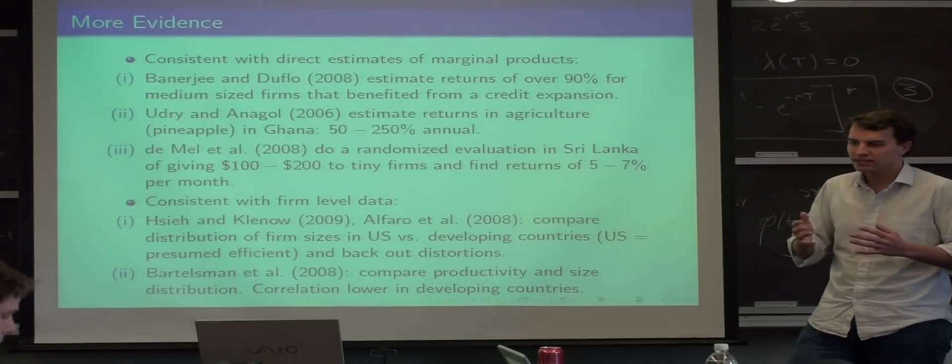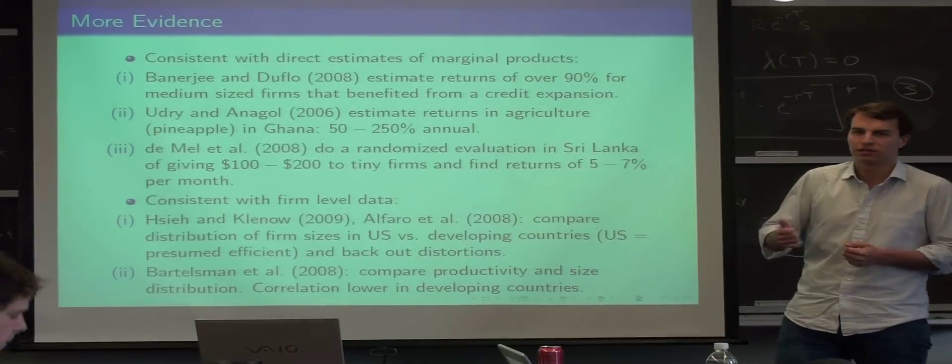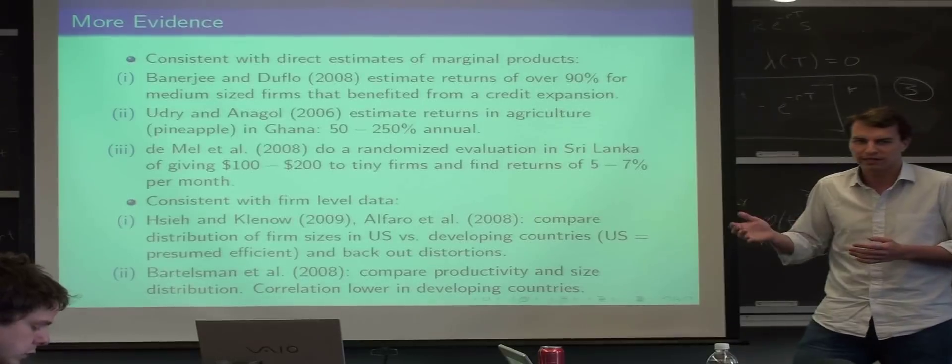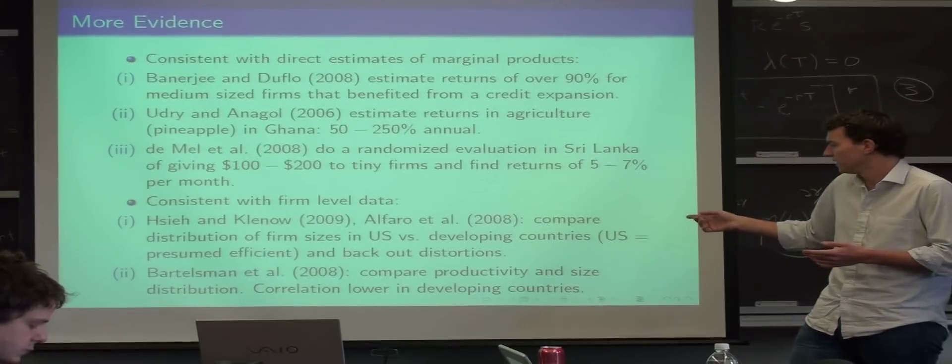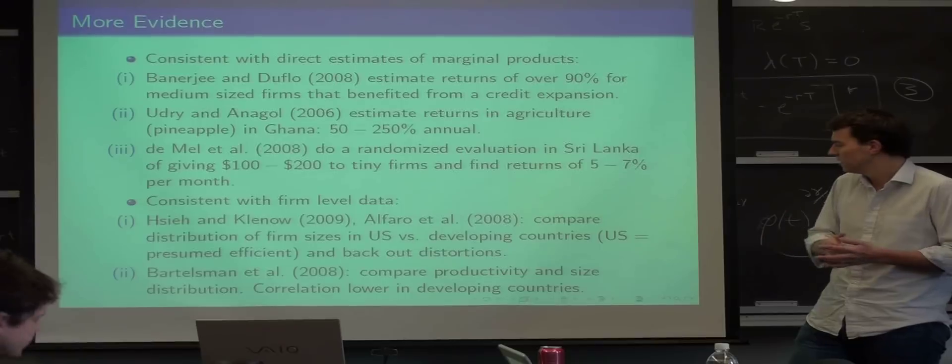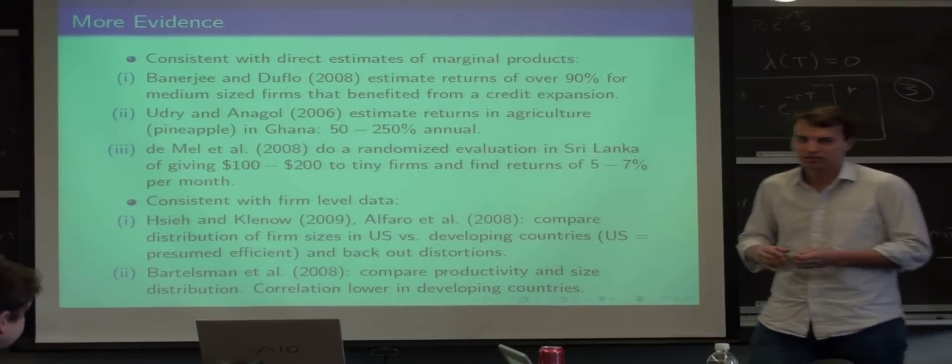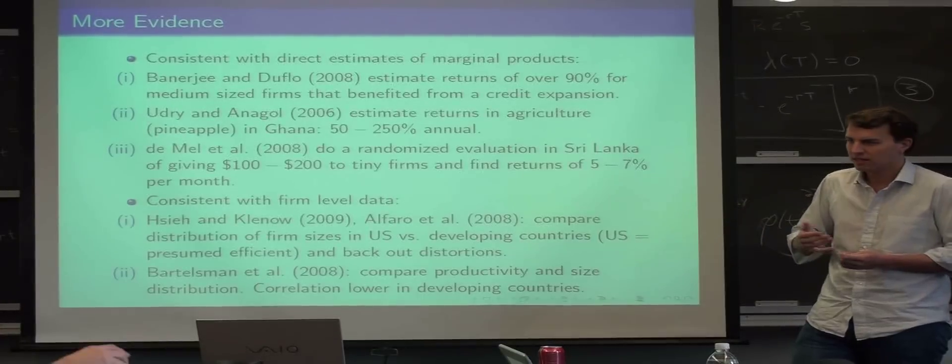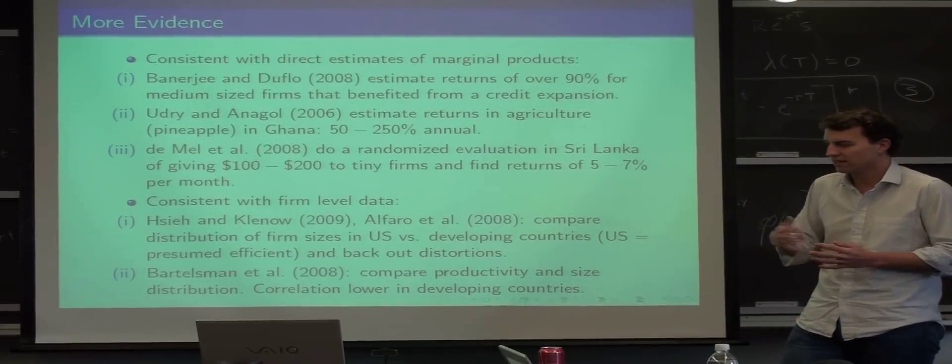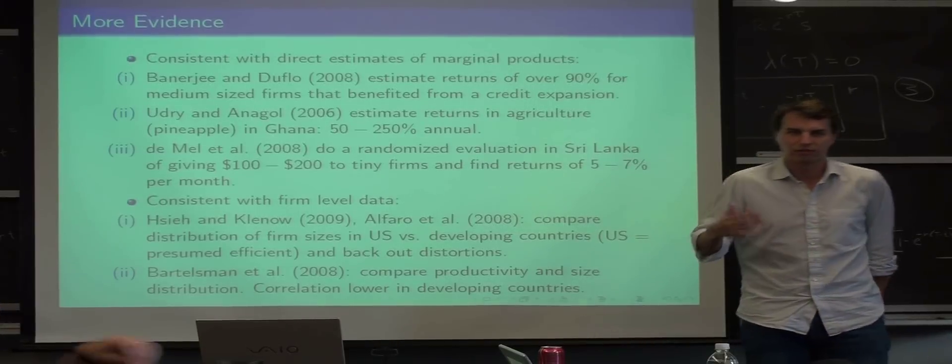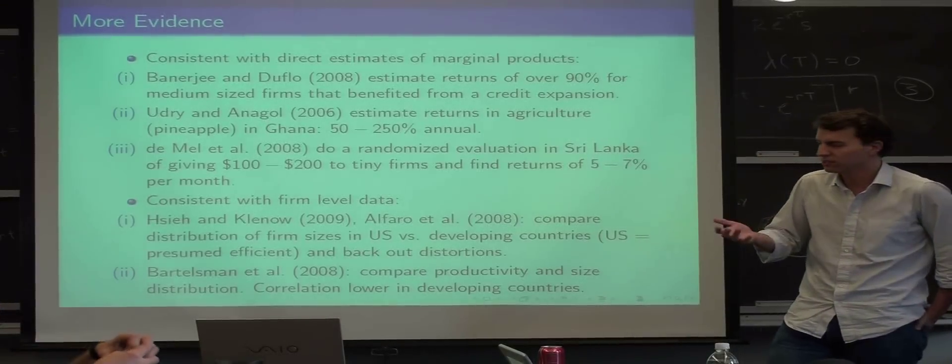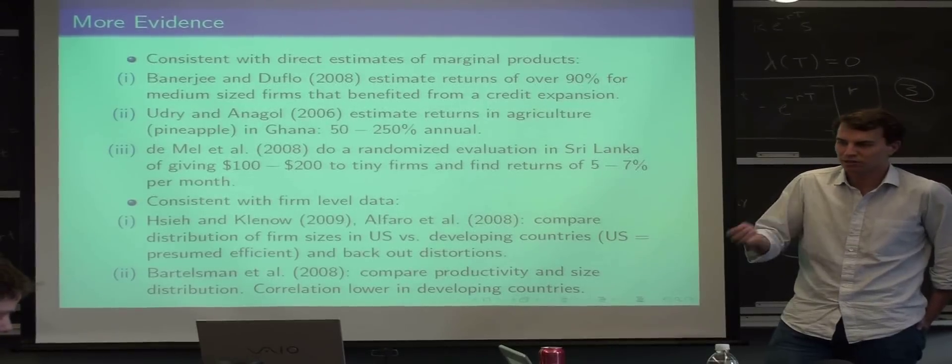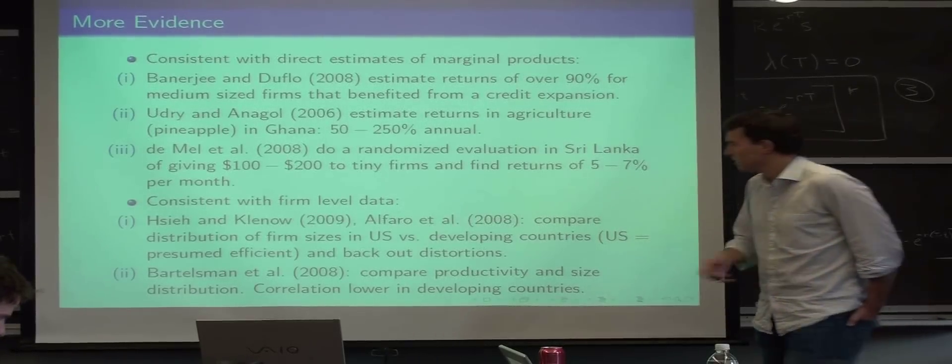Then they look in the US, what's the correlation between productivity and size, and obviously you kind of expect that more productive firms are bigger, right? In the US, that's pretty true. In developing countries, that's much less true. So there are a lot of very big firms that are very unproductive. Again, they take that as an indication that there are credit constraints and that marginal products are not equalized, because big firms who are very unproductive shouldn't be able to survive, and small firms who are very productive should grow instead. So this is some empirical evidence.